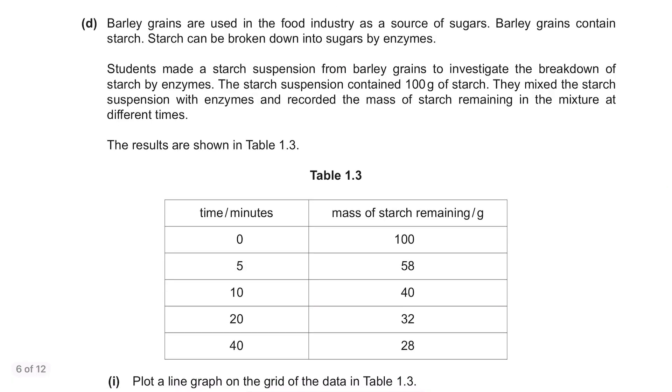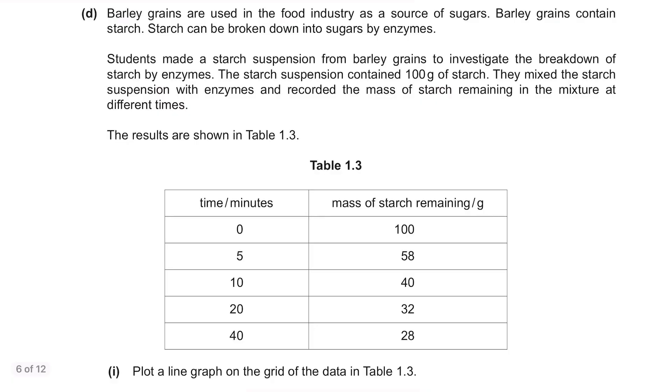Barley grains are used in the food industry as a source of sugars. Barley grains contain starch. Starch can be broken down into sugars by enzymes. Students made a starch suspension from barley grains to investigate the breakdown of starch by enzymes. The starch suspension contained 100g of starch. They mixed the starch suspension with enzymes and recorded the mass of starch remaining in the mixture at different times. The results are shown in Table 1.3. Basically, they used starch from barley to mix with enzymes and measure the time taken for the enzyme to break down the starch. This column shows the remaining starch after being broken down by the enzyme over a certain period of time.